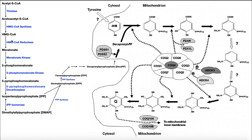Then we have the committed step in coenzyme Q synthesis, and really for a bunch of other lipids like cholesterol and vitamin D. This committed step is HMG-CoA reductase, which uses NADPH to convert HMG-CoA into mevalonate. Once you get to mevalonate, this pathway is not reversible — you can't go back to acetyl-CoA. You're committed to building something, whether it's cholesterol, vitamin D, or coenzyme Q.